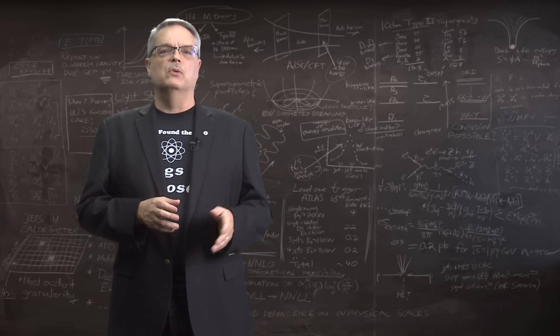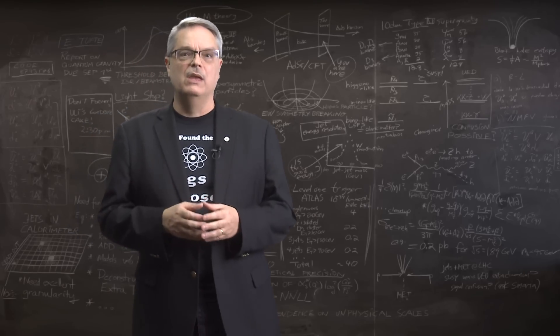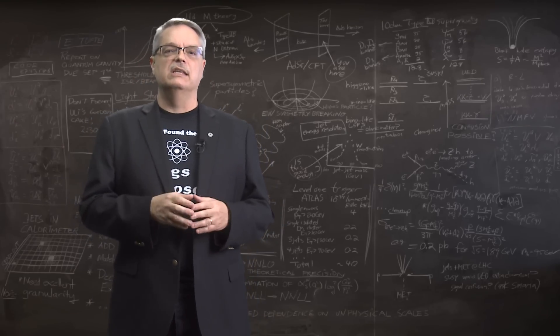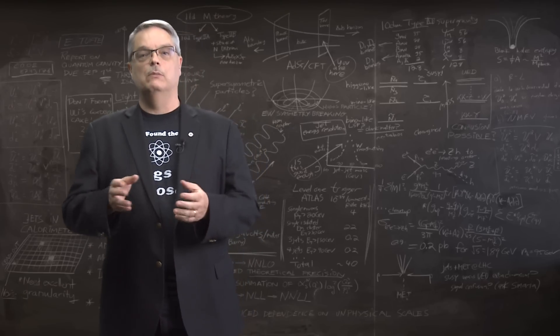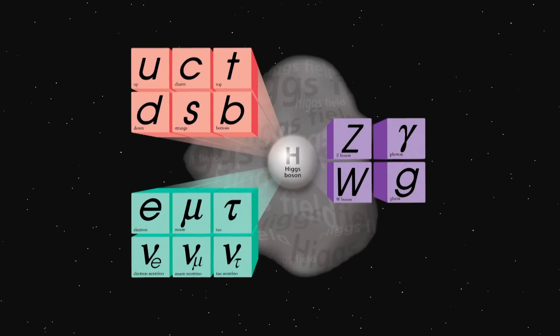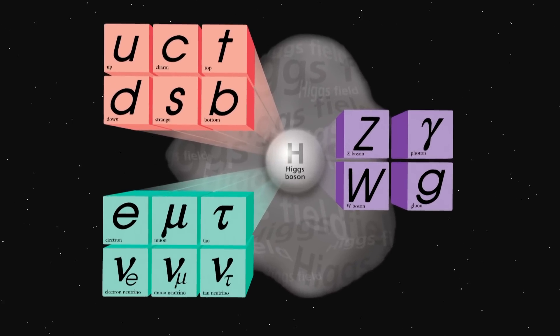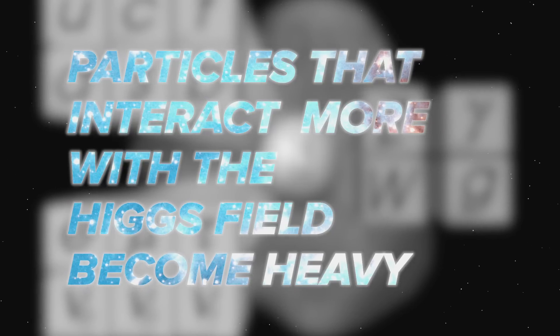You often hear people say that the Higgs bosons interact more with heavy particles, and that's true. But there's a better way to say that. The correct way to say it is that the particles that interact more with the Higgs field and boson get more mass. This is a very subtle point, so I'll say it again. It's not that heavy particles interact more with the Higgs field. It's that particles that interact more with the Higgs field become heavy. It's the interaction with the field that comes first, and the mass is the consequence.